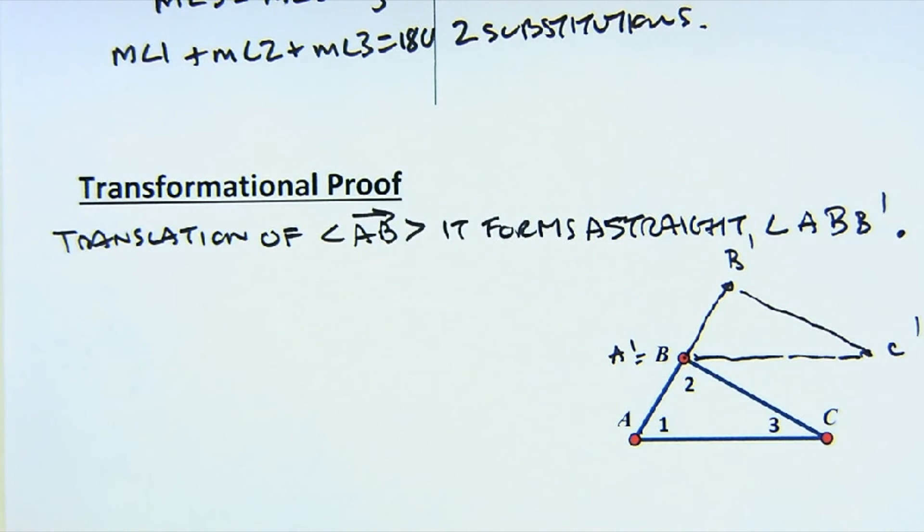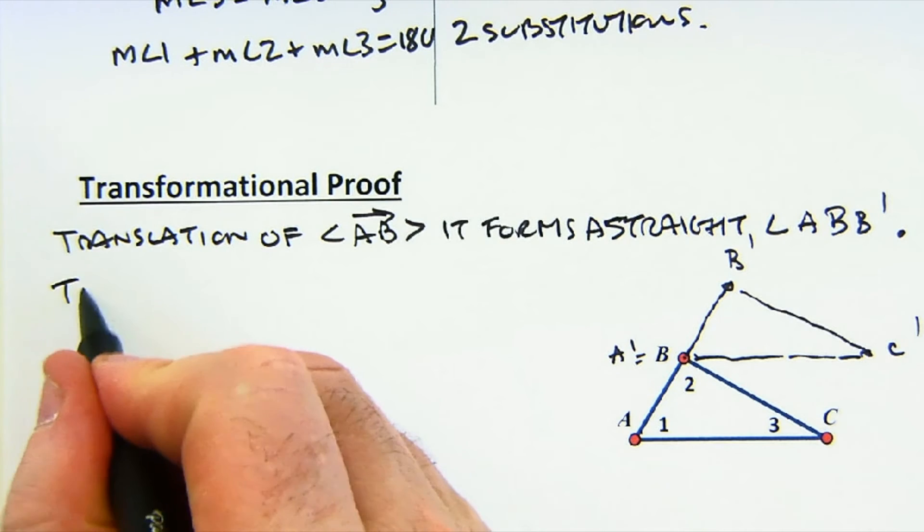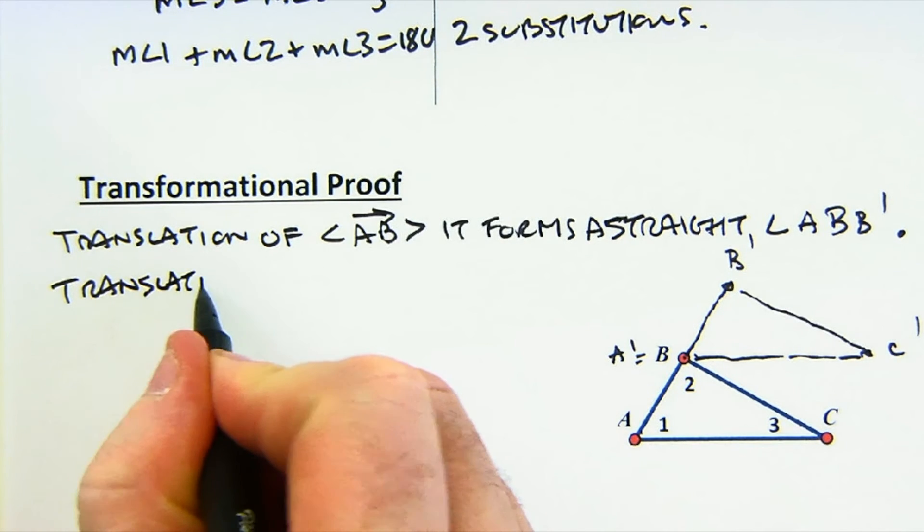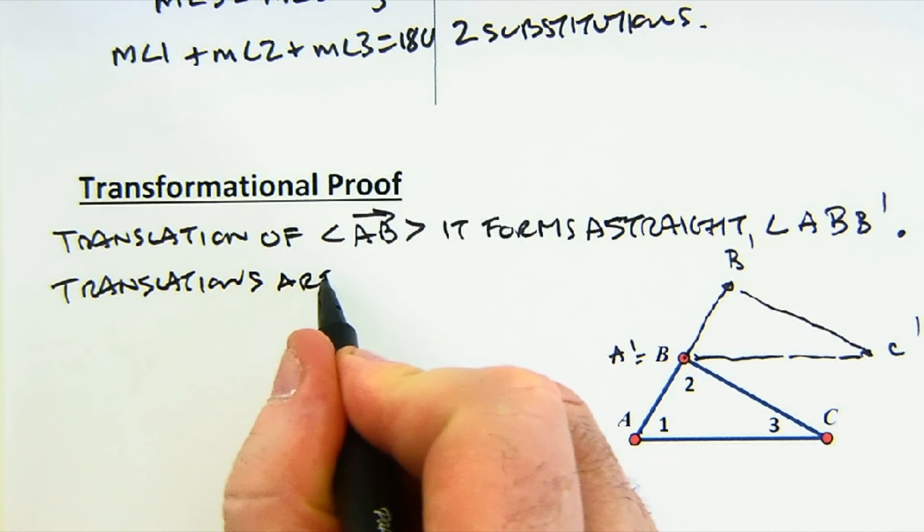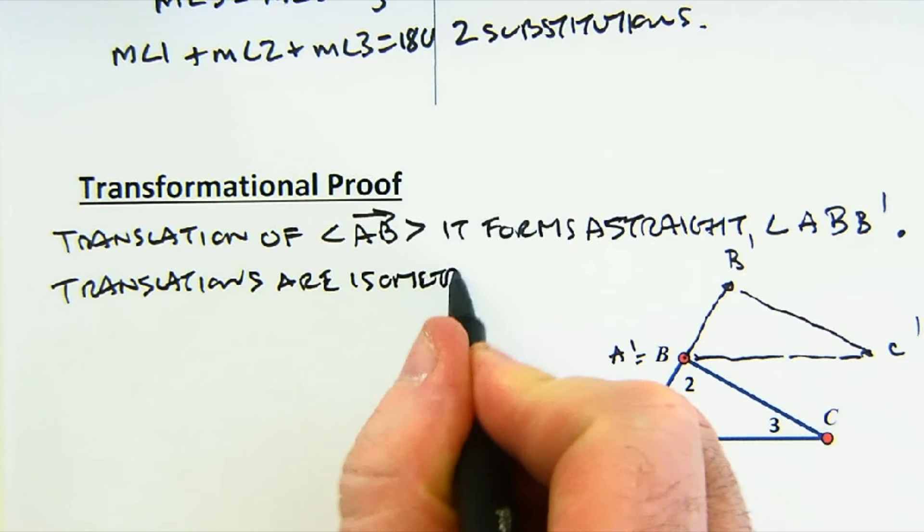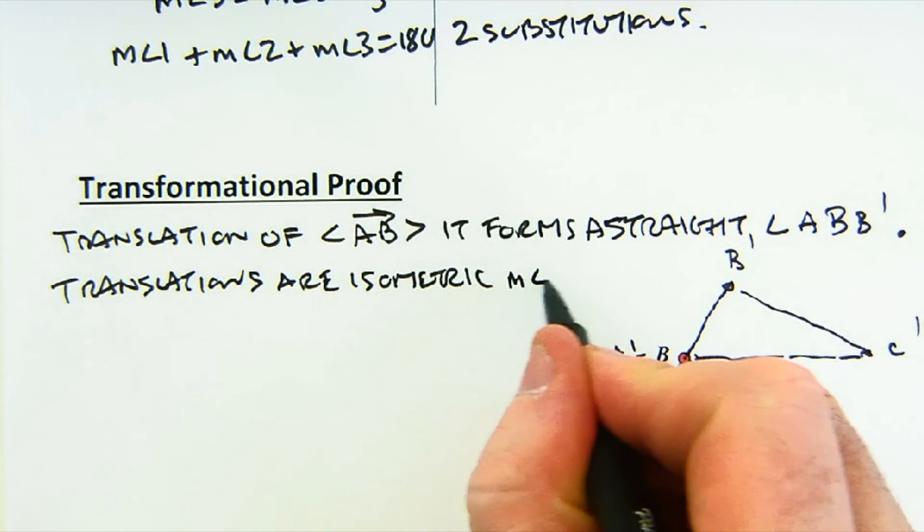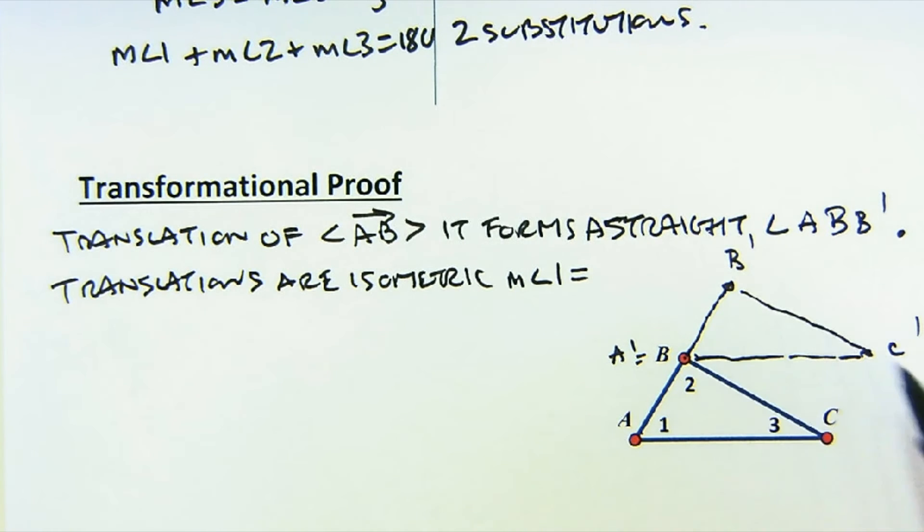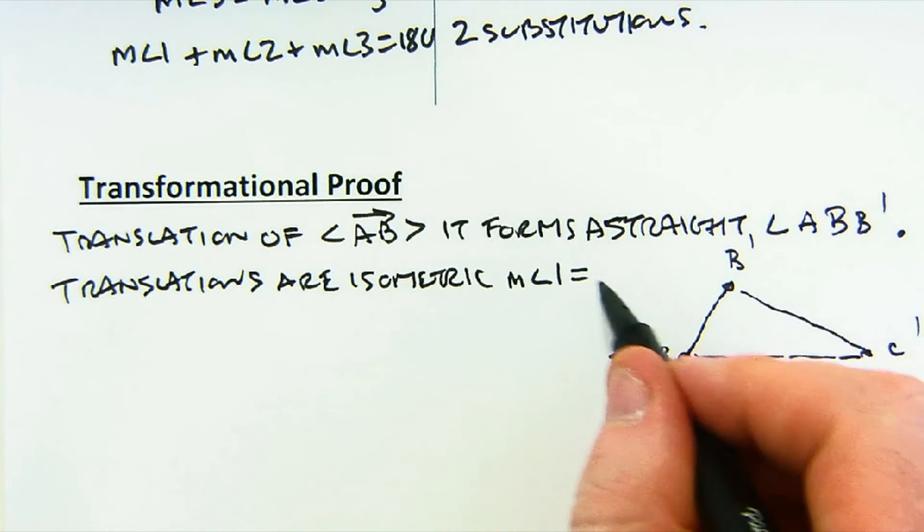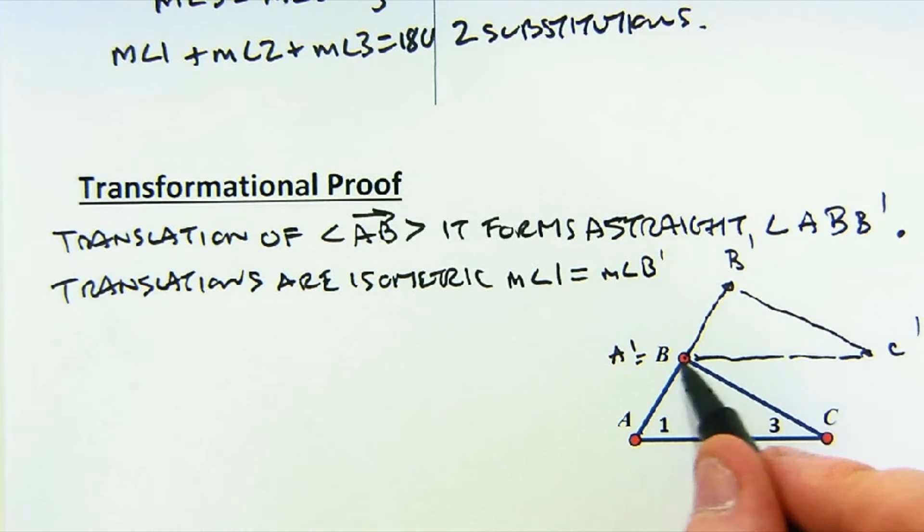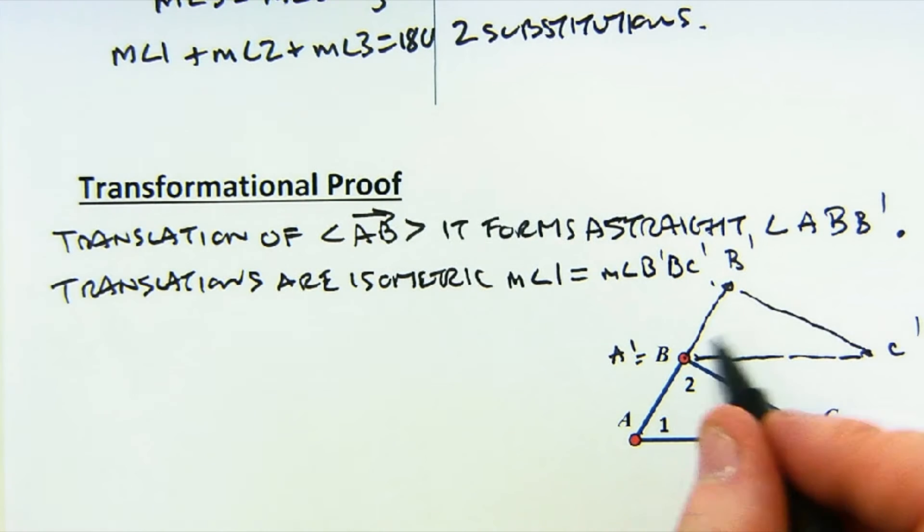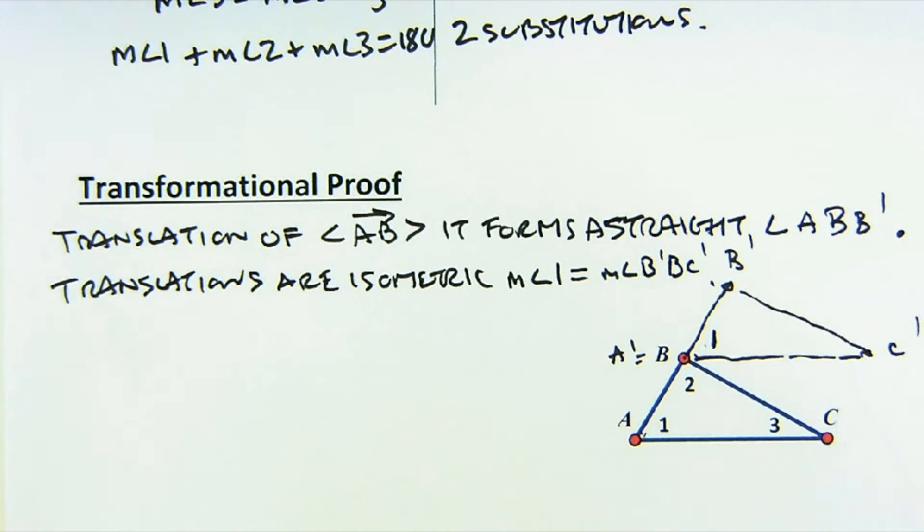Next, because I've performed a translation, I can also say that I can state that the measure of angle one is got to be the same as the measure of B prime, B, and C prime. All right, these have to be the same. These physically have to be the same because the translation makes it isometric.